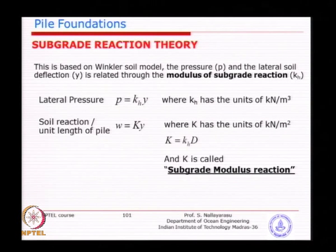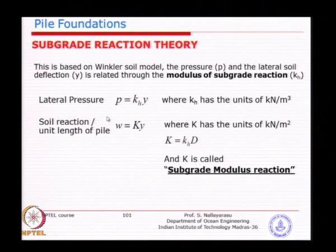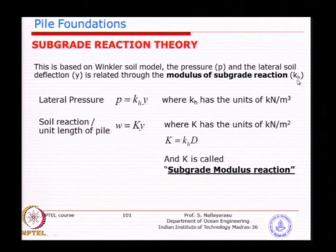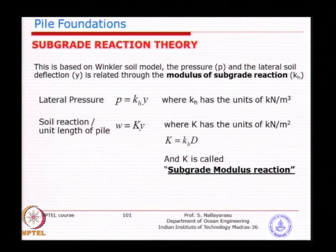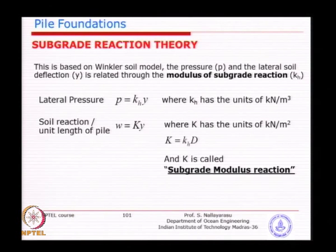Depending on which equation you use, some use the K value taking units of pressure or stress. Older textbooks use capital K, whereas for offshore applications you will mostly use small KH which is the modulus - the variation - applicable to steel pipe piles. For concrete piles, capital K value is used because that is how the empirical equations are set up. You have to be cautious in using units of modulus of subgrade reaction.